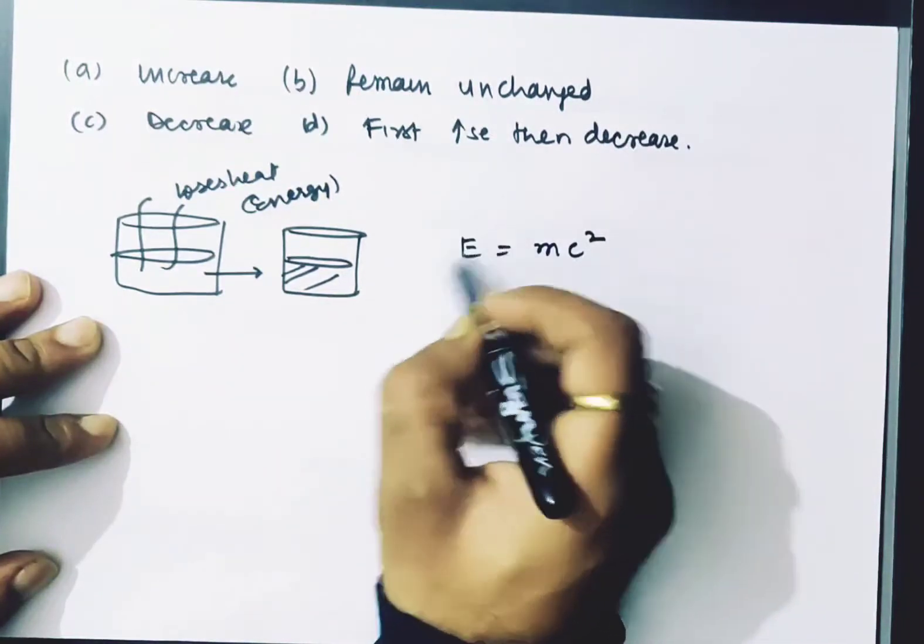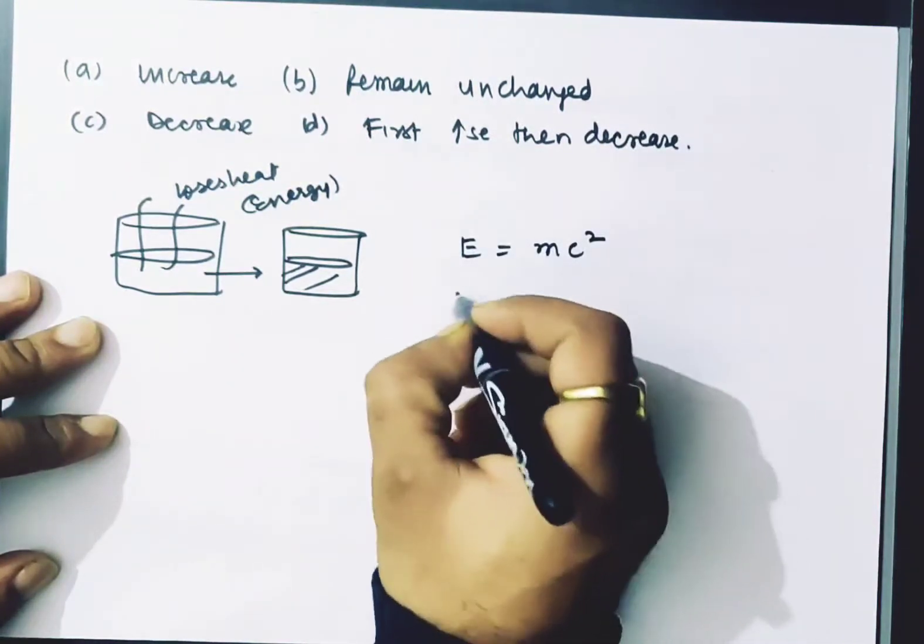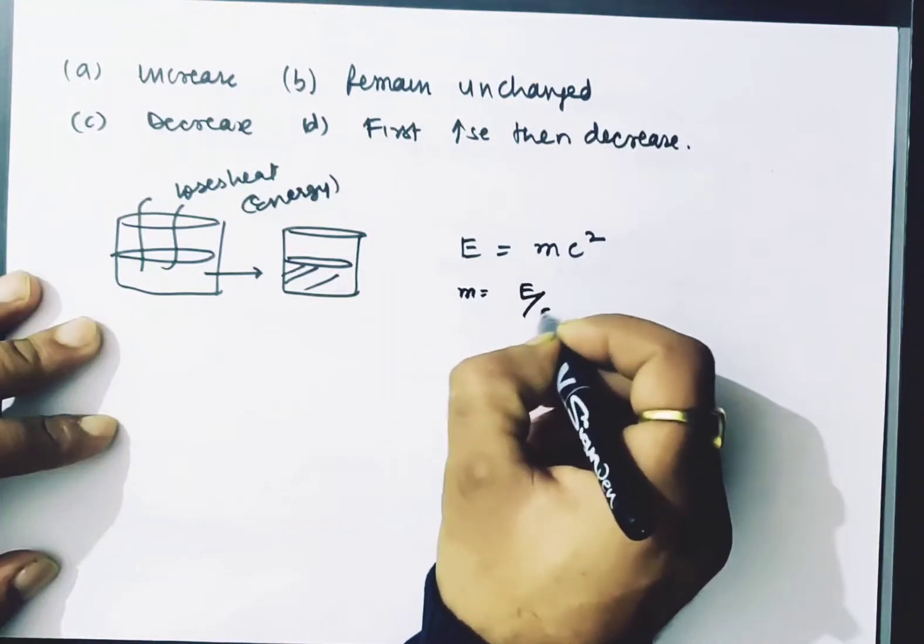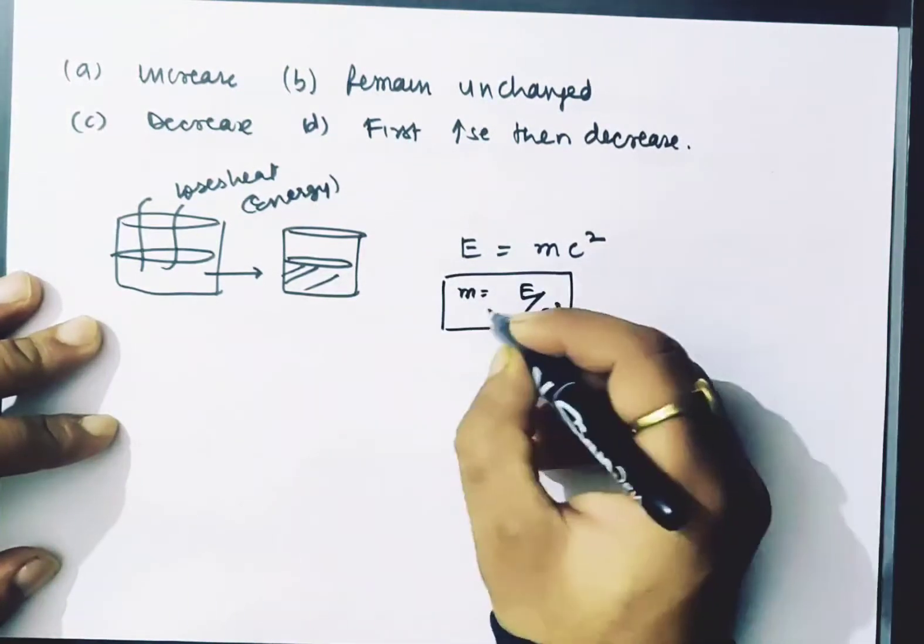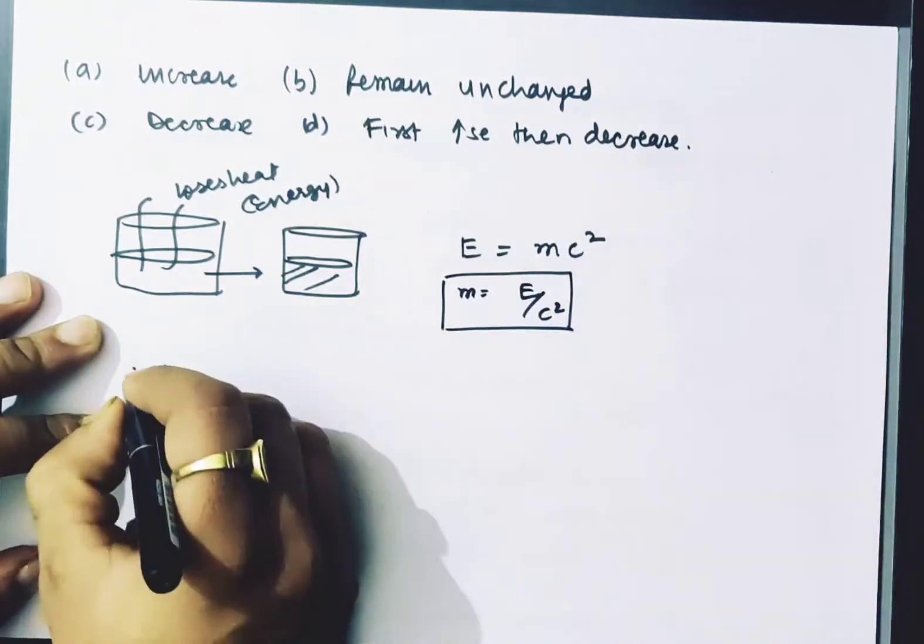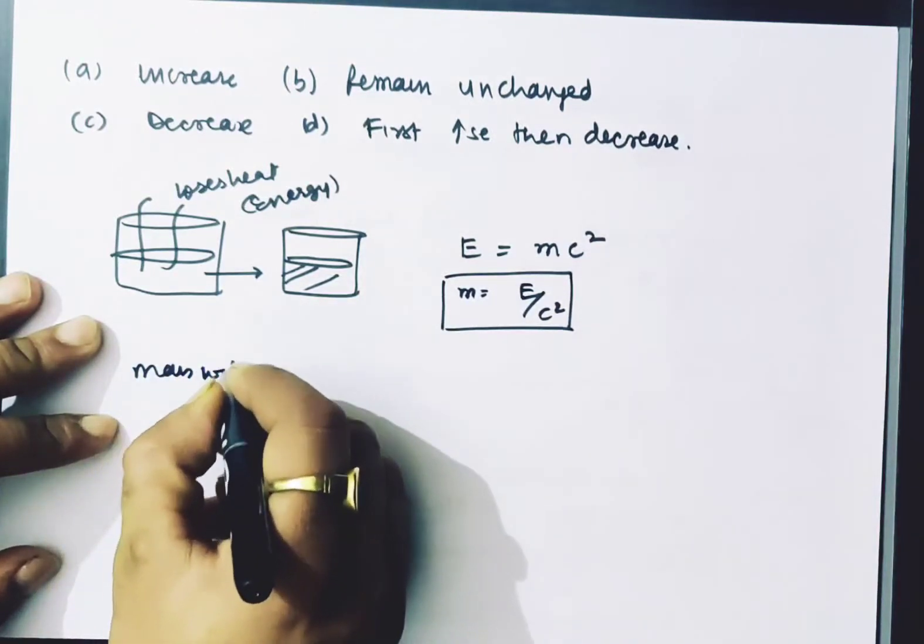some energy is lost. That means some mass is lost according to E = mc². Because heat has gone out, the mass will decrease.